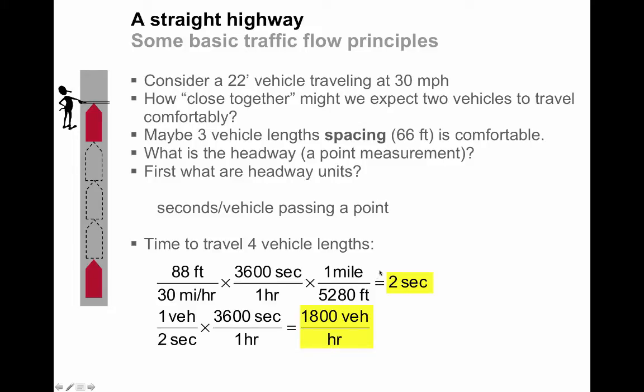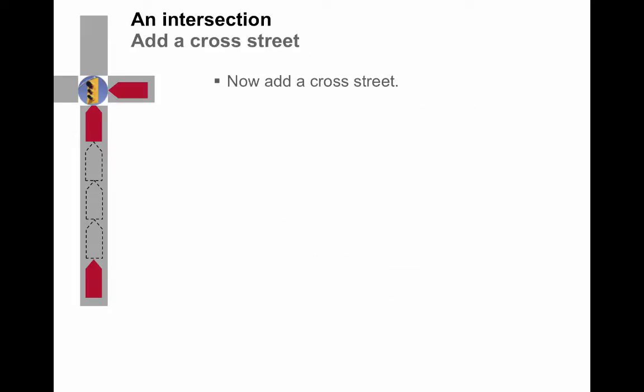Of course, we remember that the inverse of headway is flow. So we can simply take the inverse of that, one vehicle every two seconds, times 3,600 seconds per hour, just dimensional analysis, translates to a flow of 1,800 vehicles per hour. So we've translated two vehicles on the road with a particular spacing to a two-second headway to an 1,800 vehicles per hour flow.